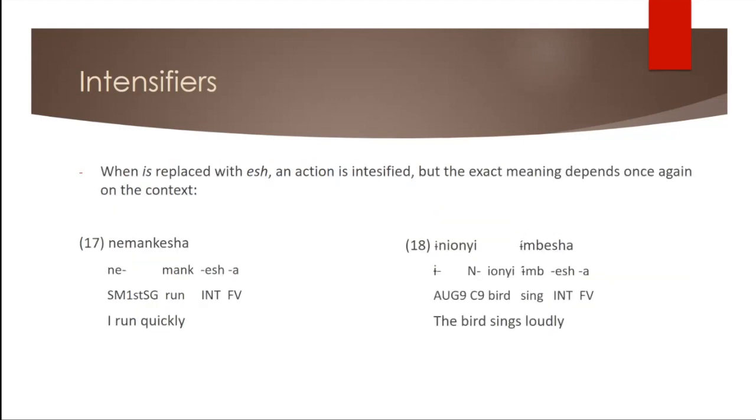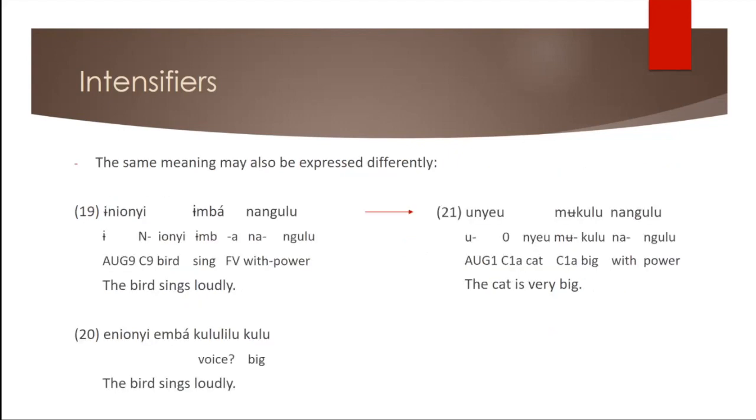And that last sentence, the bird sings loudly, the loudly parts can again be expressed in other ways. For example, in 19, where the expression nanguru, translating to with power is used to say loudly. Or we could also say meaning the bird sings in a big voice, but this nanguru in 19 can also be found in other sentences as an intensifier, very. So it would translate to the cat is very big or powerfully big, literally.